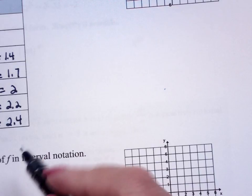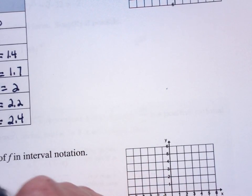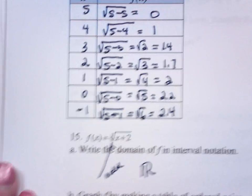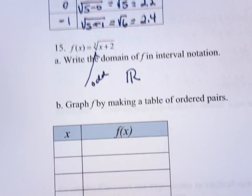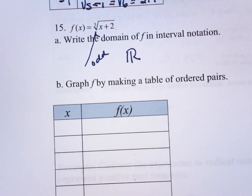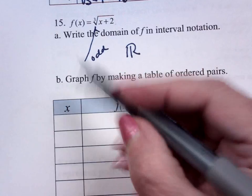What's the domain of x plus 2? All real numbers. And that's because I've got an odd index. Now, when I'm dealing with all real numbers, I'm going to go to about the middle.